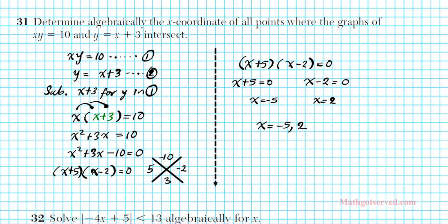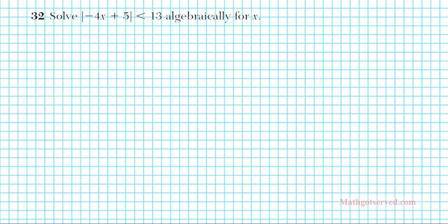Let's move on to problem 32. We're to solve an absolute value inequality algebraically for x. When you're dealing with absolute value inequalities, you really have to closely examine the inequality you're dealing with. This is a less than. Whenever you're dealing with a less than absolute value inequality, you're bounded between two values. You're within an interval.